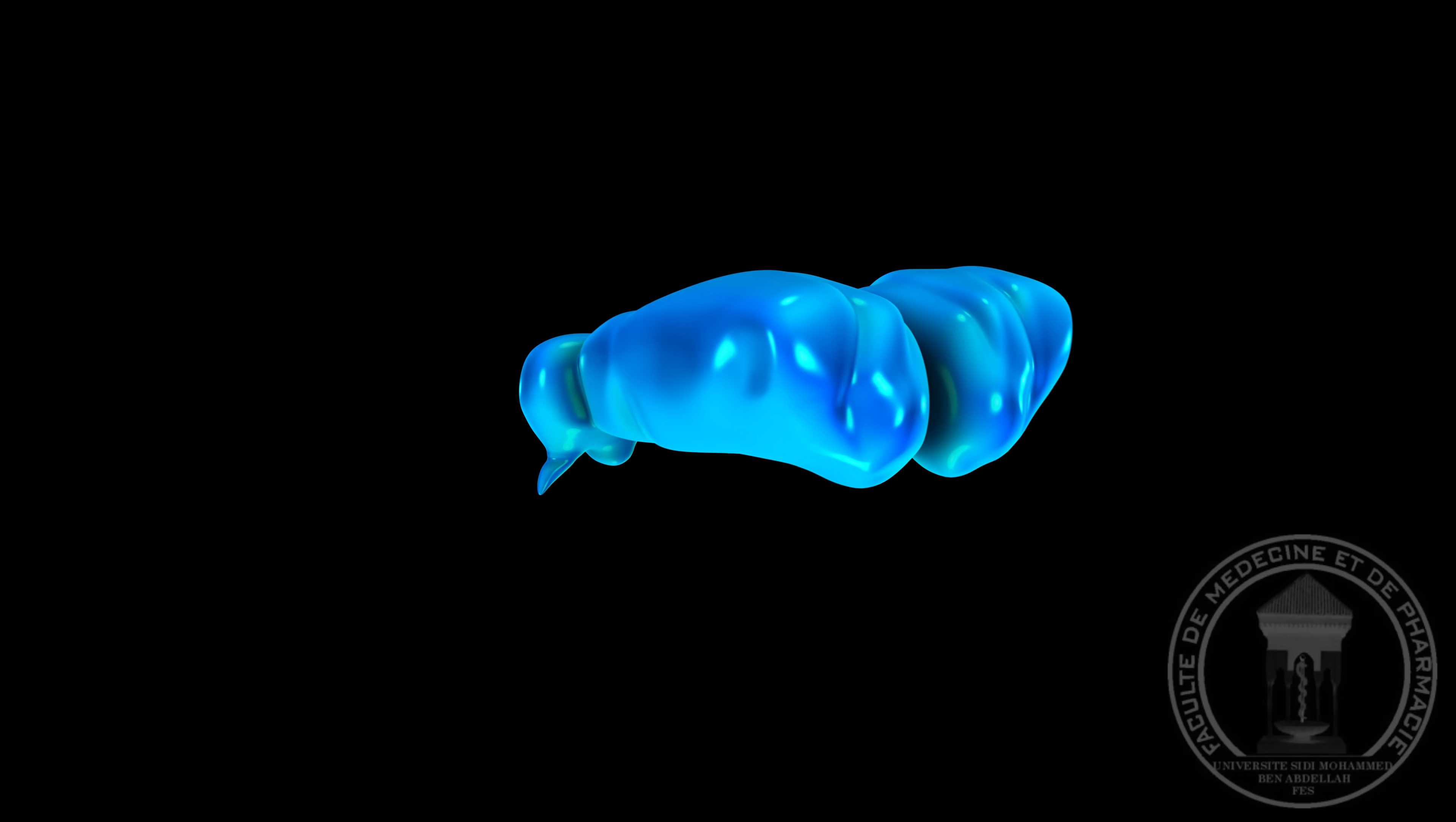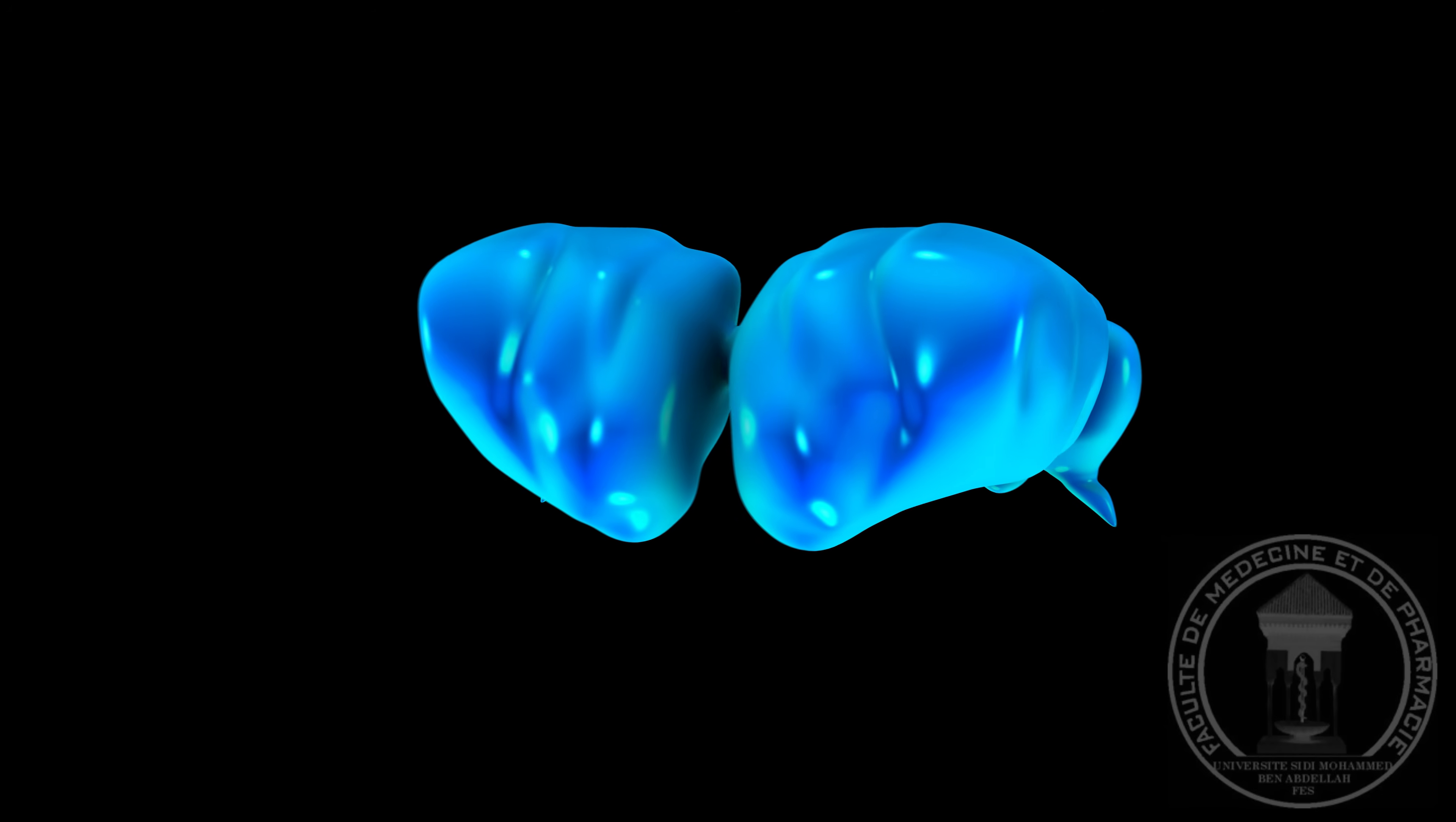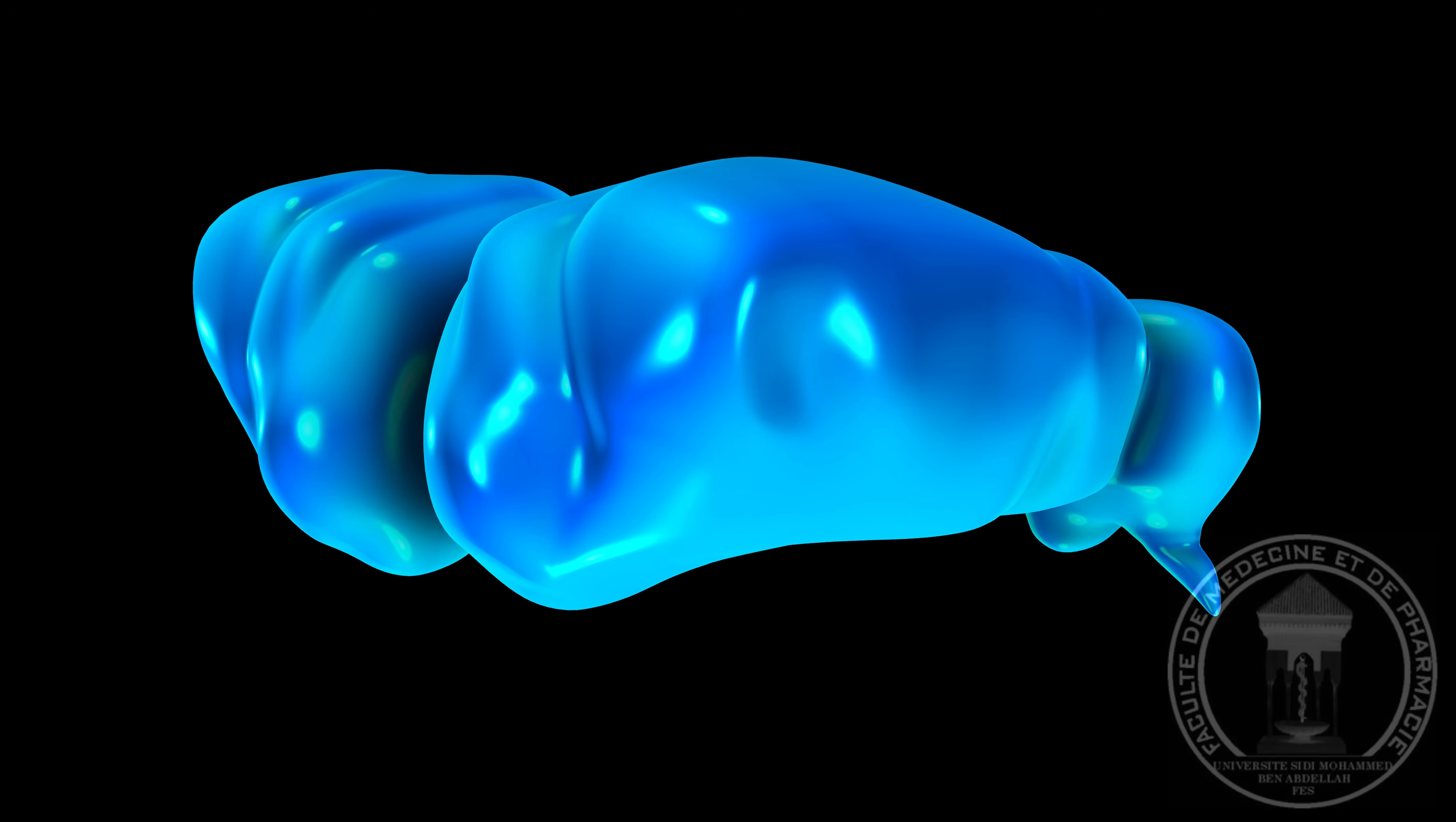Le thalamus est un complexe nucléaire qui occupe une grande partie du diencéphale. Il assure un relais impératif à la grande majorité des afférences sensorielles qui remontent jusqu'au cortex cérébral.